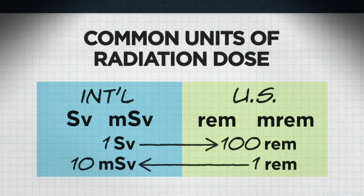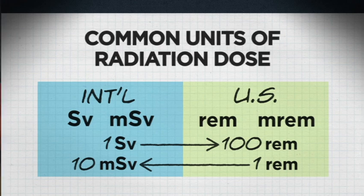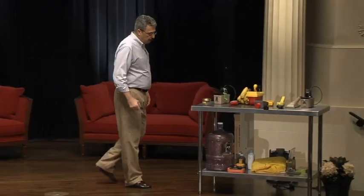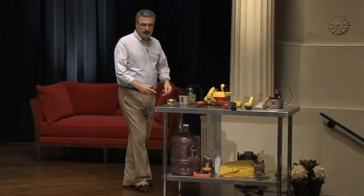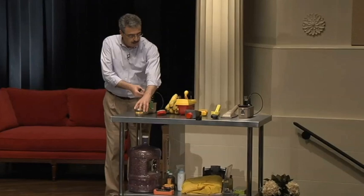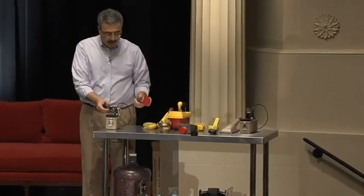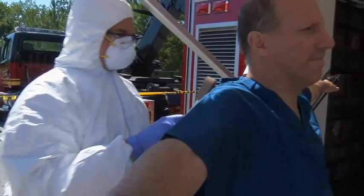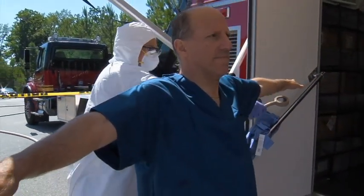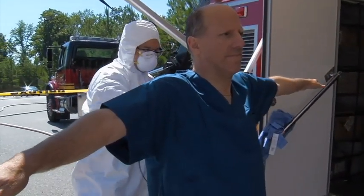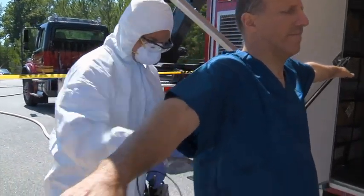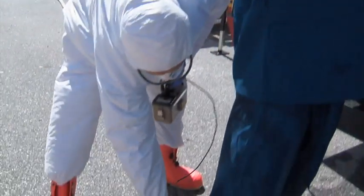There are different types of instruments we could use. This is the pancake probe — a portable instrument ideal for measuring or screening for contamination on surfaces, either a person or an object. It's a very common instrument.